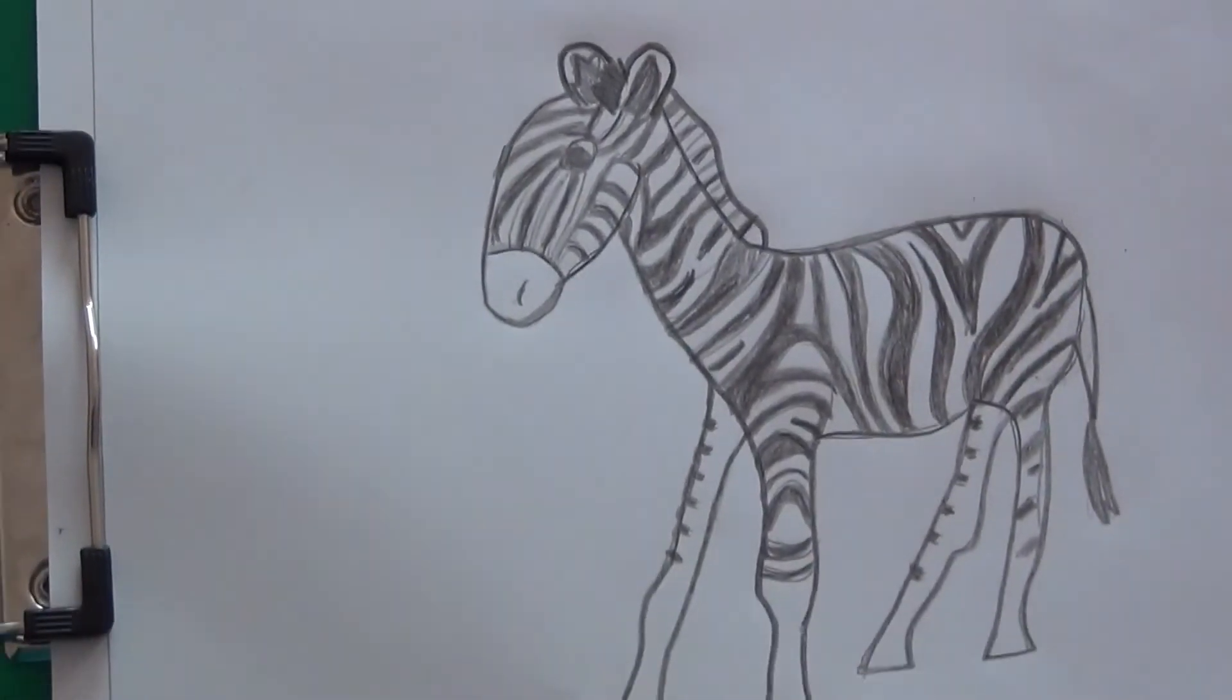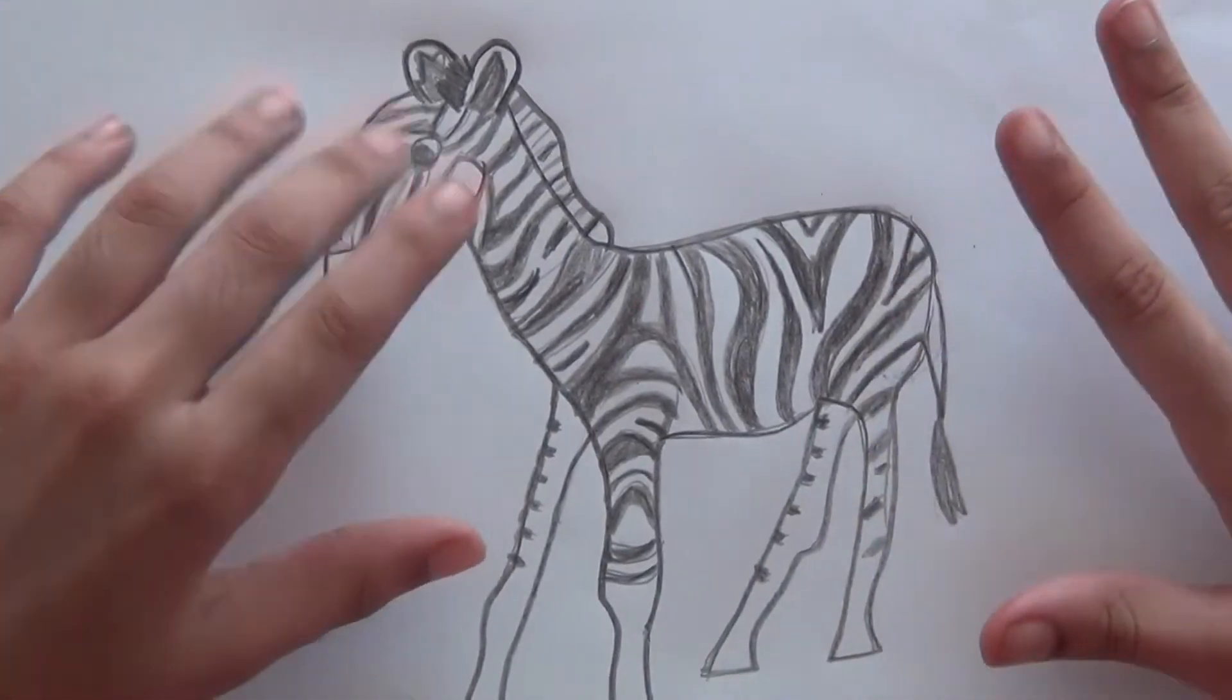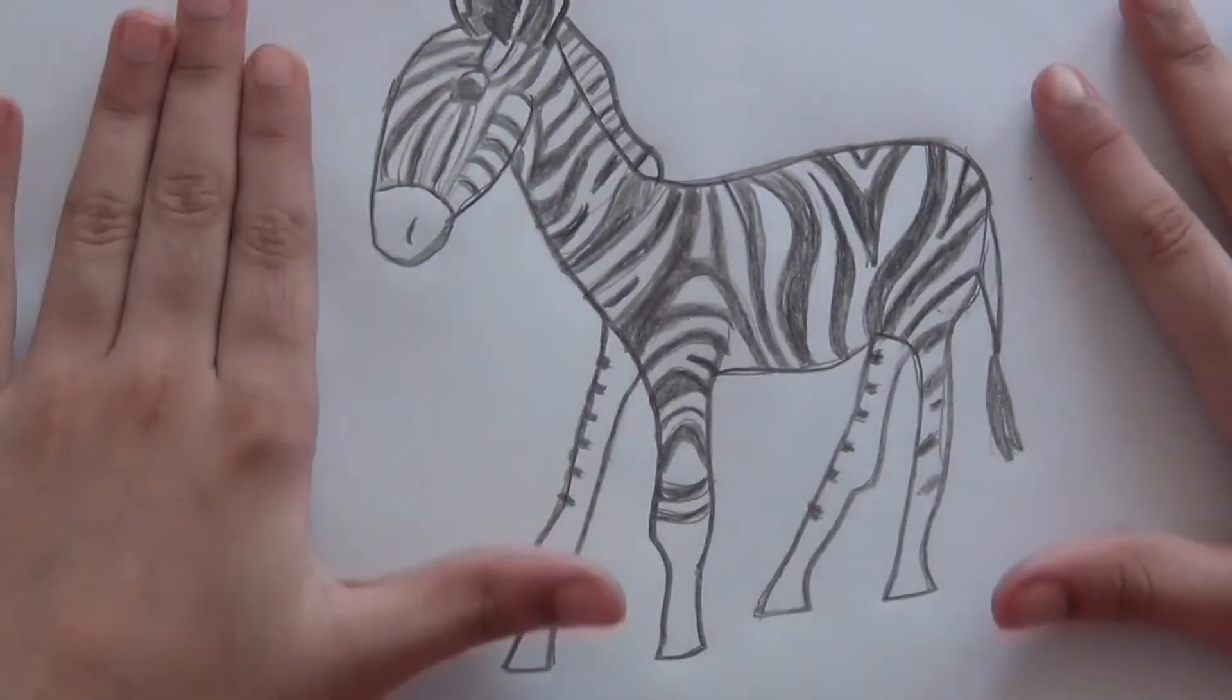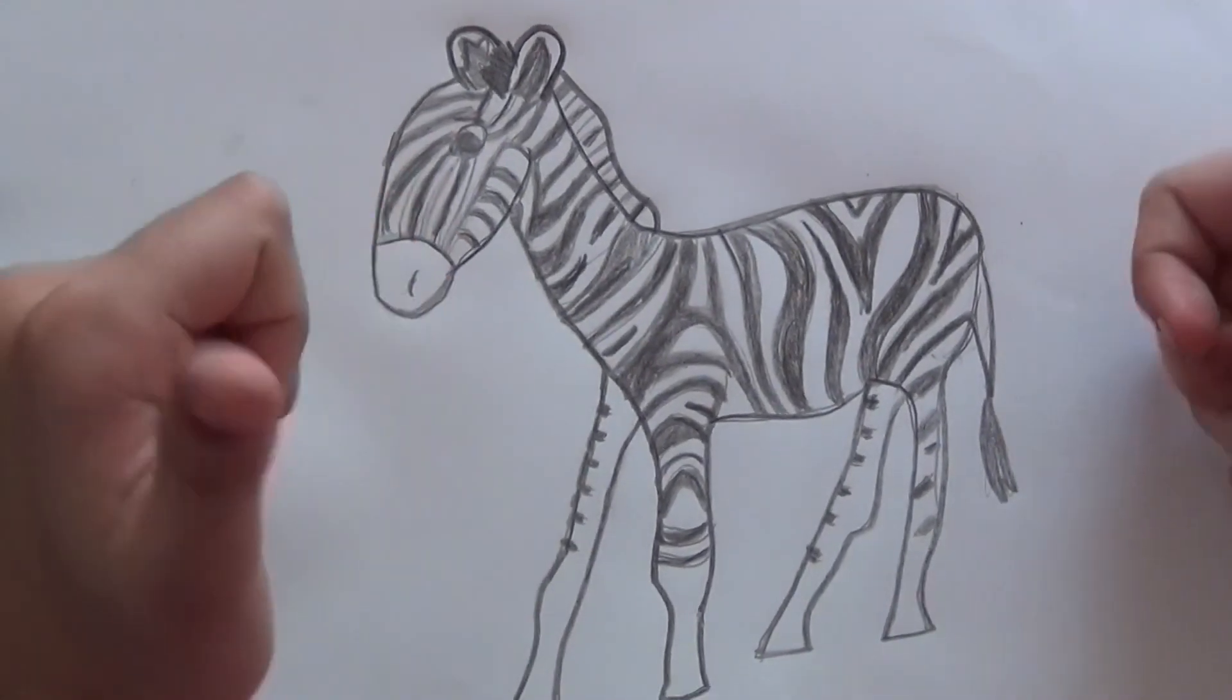And done! I have kept the outline, I have colored stripes, and I'm done with the zebra. So like this video, subscribe, and thanks for watching.